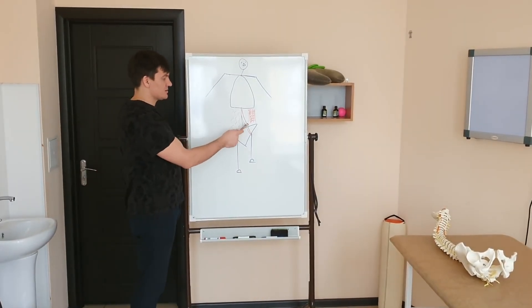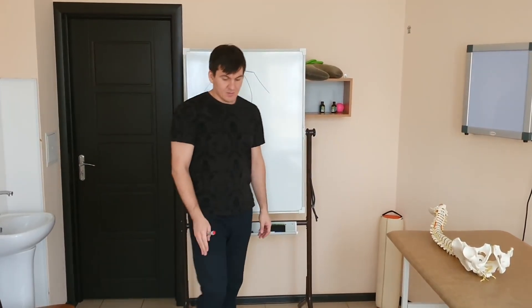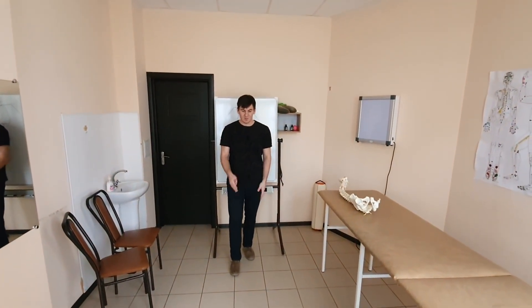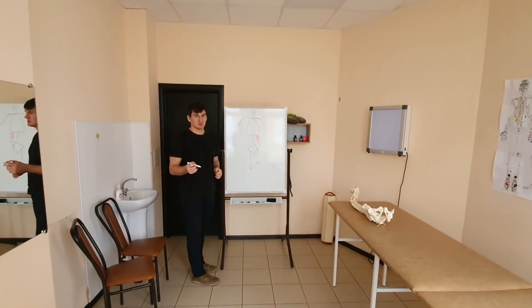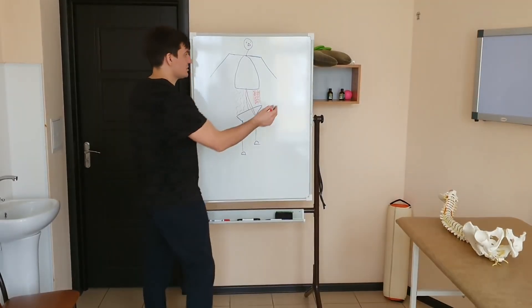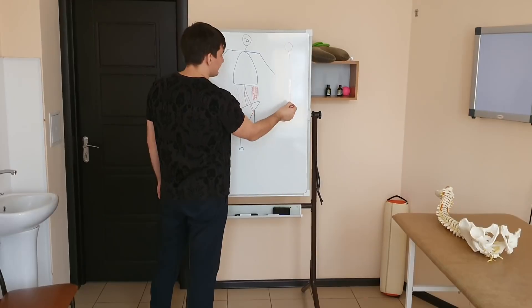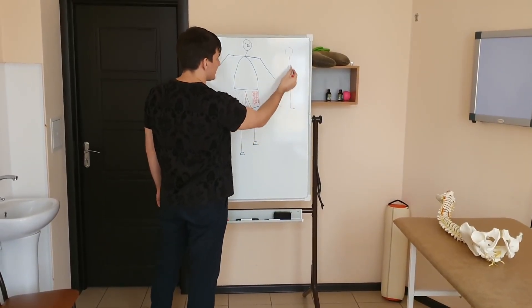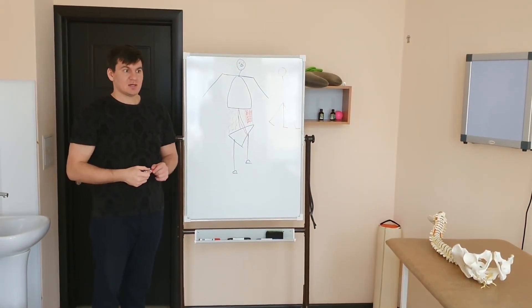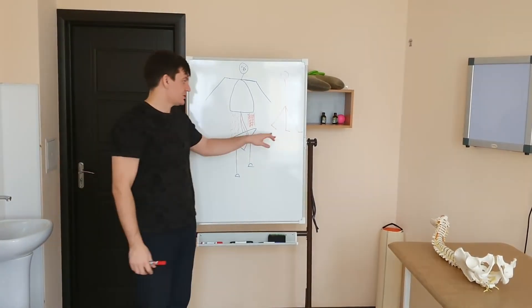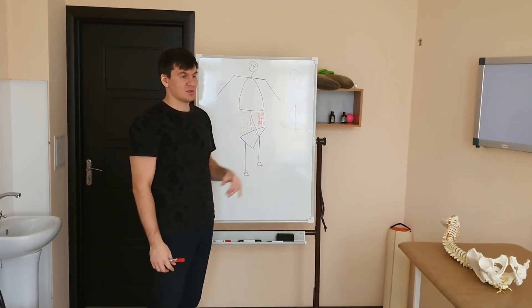Three muscles must work: the quadratus lumborum, the lumbar muscle, and the oblique abdominal muscle — at the moment when you swing your leg as it moves from the back position to the front. You can divide the leg into three positions during a step: the leg is in the back, the leg is in the middle position, and the leg is in the front. Each of these positions should be combined with a certain position of the pelvis and the work of certain muscles.